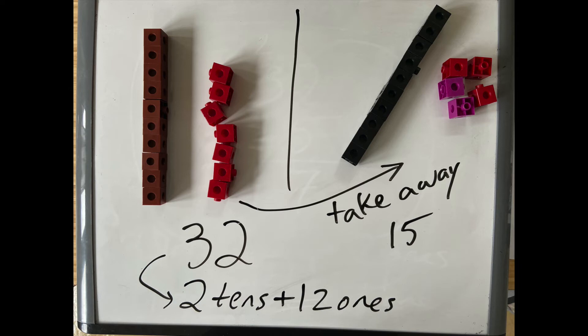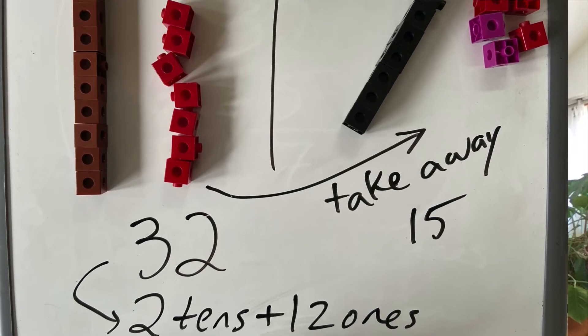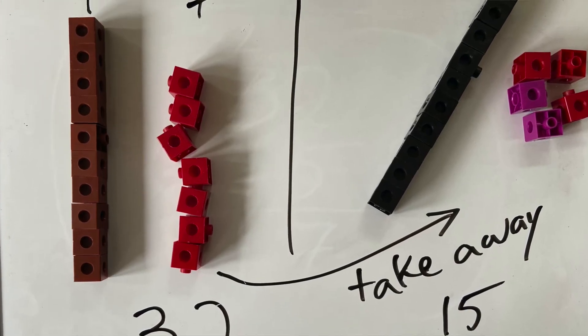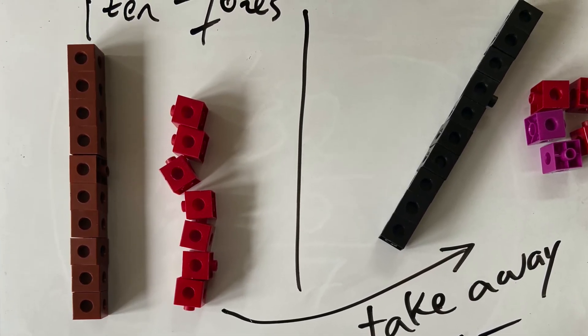With two tens and 12 ones, I can now take away one ten, that one in the fifteen, and five ones, the five in the fifteen, from each of my pieces. Two tens minus one ten is one ten, twelve ones minus five ones is seven ones. So I have one ten and seven ones, seventeen.